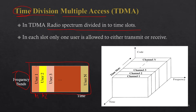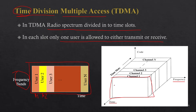The switching is very fast so that it looks like continuous communication. In each slot, only one user is allowed to either transmit or receive information. The same thing we can observe in figure 2 — we have frequency on one axis and time on the other, and we allocate the full frequency to different users in different time slots, calling them channel 1, 2, up to N.